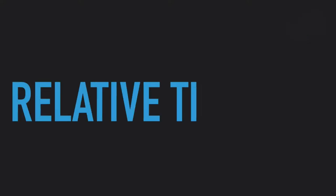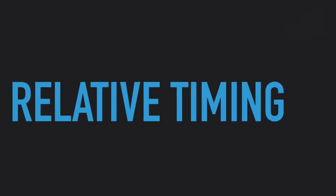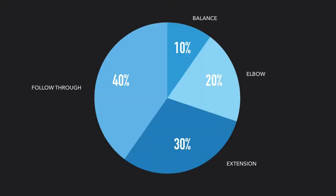Relative timing — the second invariant feature — does not change from one performance to another. Here's a chart listing the timing of a basketball shot broken into four parts: balance takes about 10% of the overall time, setting the elbows about 20%, extension of the elbows about 30%, and following through about 40% of the overall time to perform the movement.